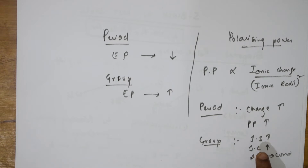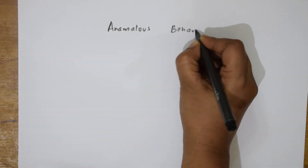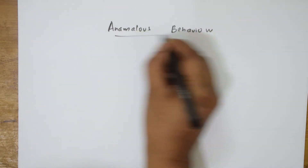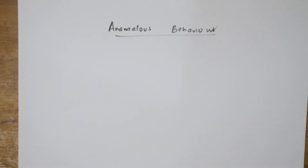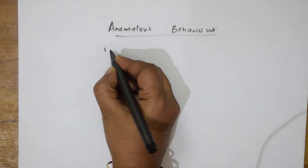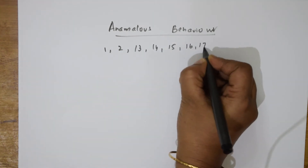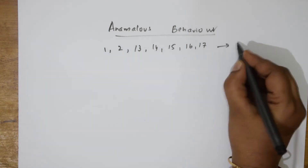The next important concept is anomalous behavior of elements. The first element of each group shows anomalous behavior — the first element of groups 1, 2, 13, 14, 15, 16, and 17 all show anomalous behavior.